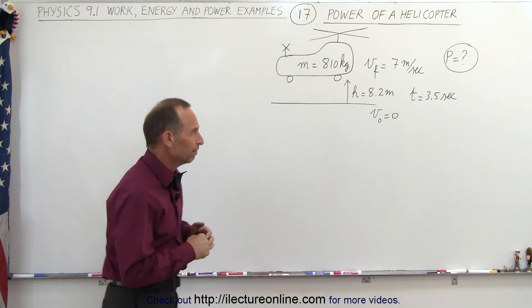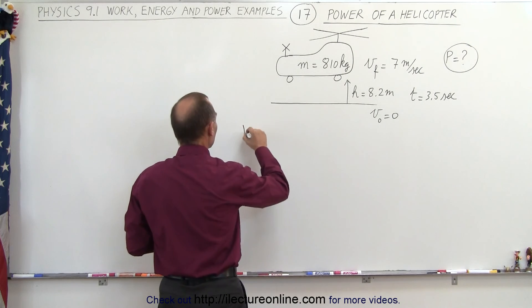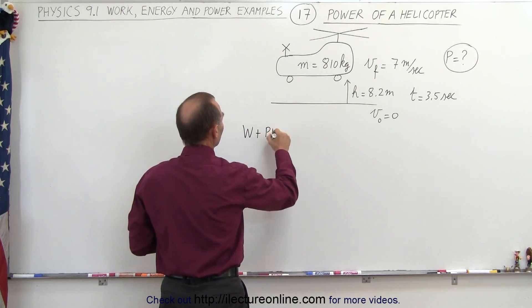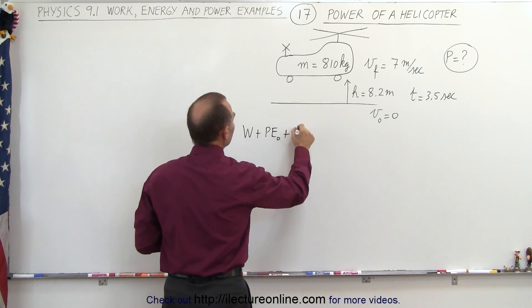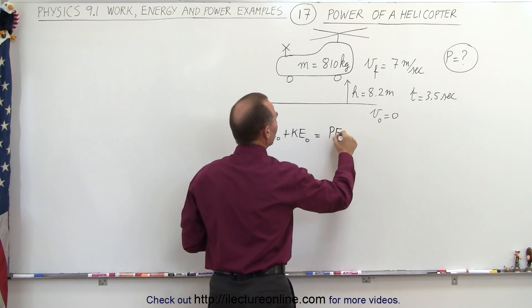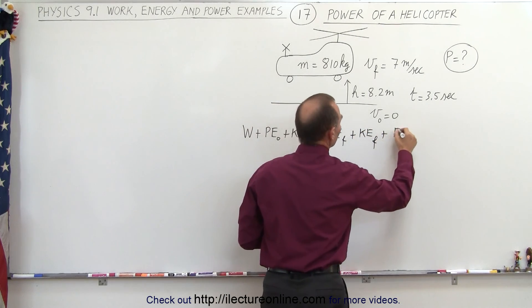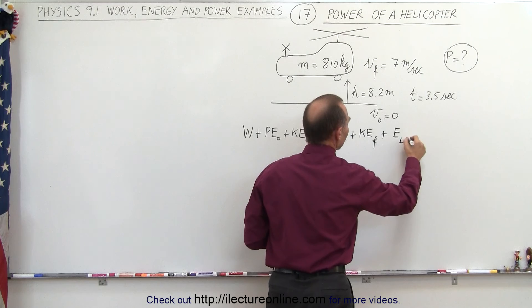How do we do this one? Well, let's start with our regular equation again. Start off with the work put into the system plus any initial potential energy plus any initial kinetic energy should equal any final potential energy plus final kinetic energy plus any energy loss due to friction or wind resistance or anything like that.